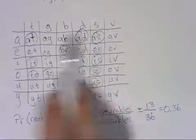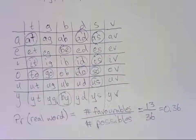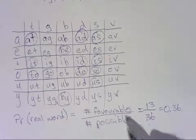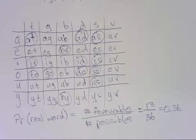Anyway, that is an example of using one of these probability tables. And, of course, the probability formula, number of favorables over number of possibles.